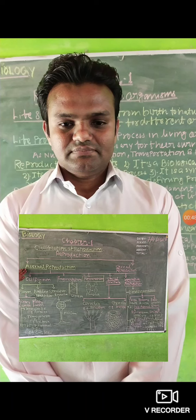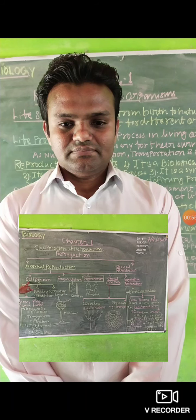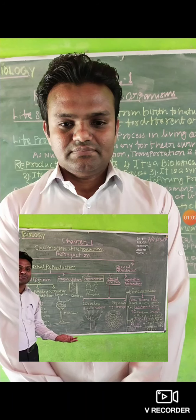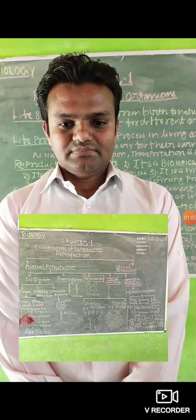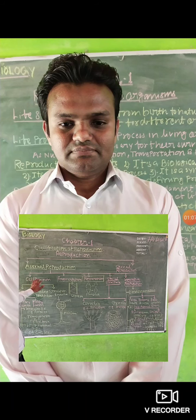In asexual mode of reproduction, the first sub-mode is cell division. In this process, any cellular body — it may be any kind of living organism — its cell gets divided. In cell division, there are three conditions. The first condition is fission.